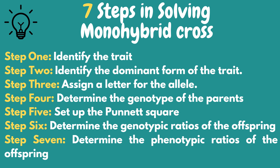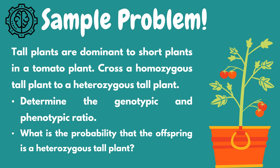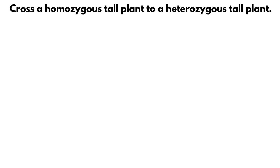To apply the steps in solving monohybrid cross problems, let's try to answer a sample problem using all 7 steps. Tall plants are dominant to short plants in a tomato plant. Cross a homozygous tall plant to a heterozygous tall plant. We need to solve for the genotypic and phenotypic ratio, and also determine the probability that the offspring can have a heterozygous tall plant.